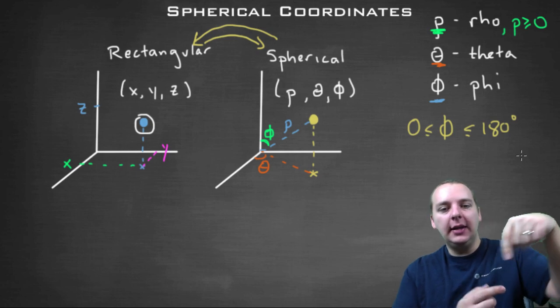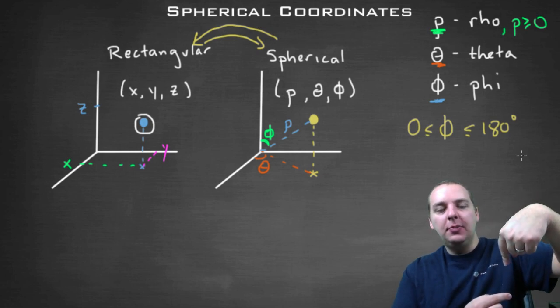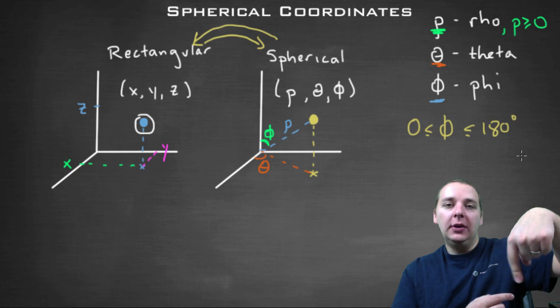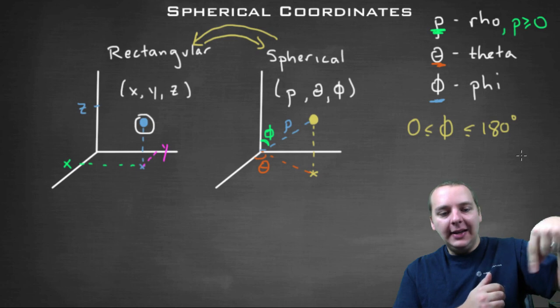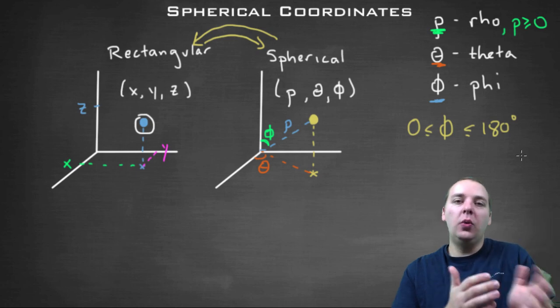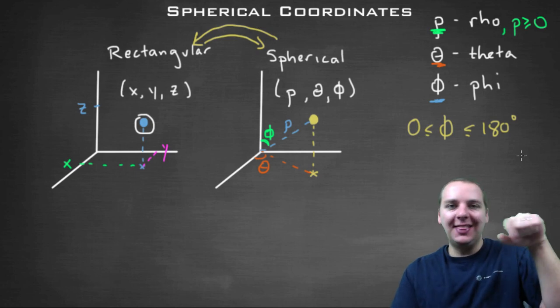But if it exceeds 180, then it would actually be an angle less than 180 on the opposite side. For example, if it was 190, then we could just call it 170 and change the theta angle.